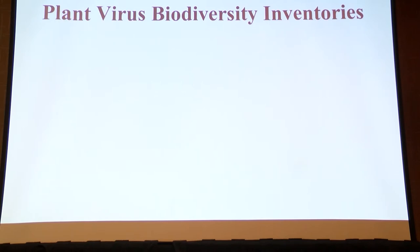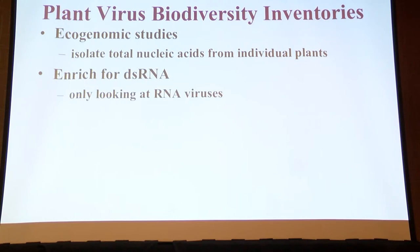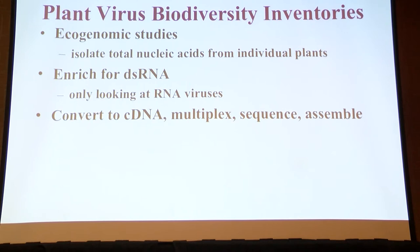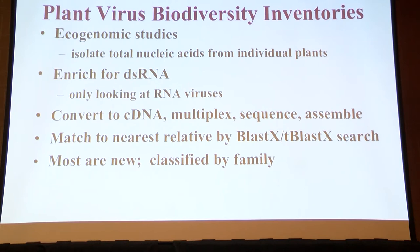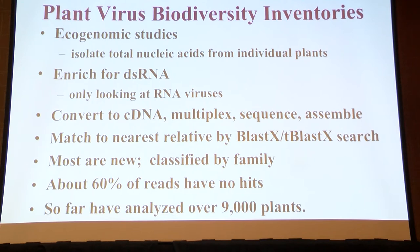We've been doing biodiversity inventories for a while with our ecogenomic studies, isolating total nucleic acids from individual plants, enriching for double-stranded RNA, converting to cDNA, multiplexing, and sequencing. Most of what we've found has been new — we can classify them by family, but they don't look like known viruses at the genus or species level. About 60% of reads have no hits. So far we've analyzed about 9,000 plants this way, and we know who every host is in every study.